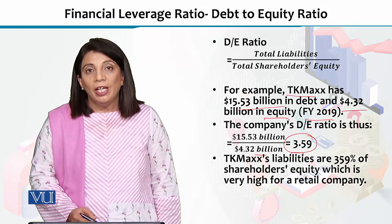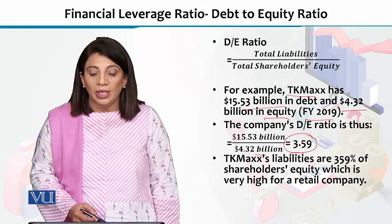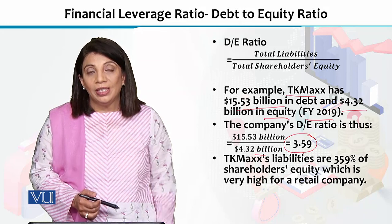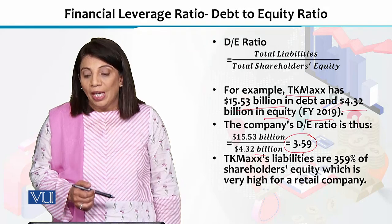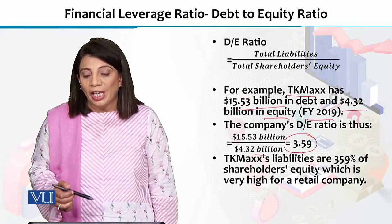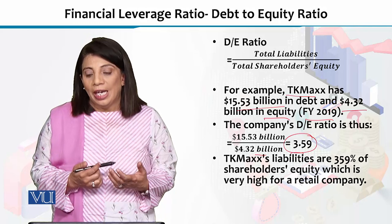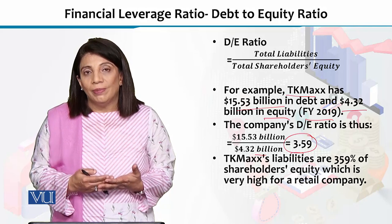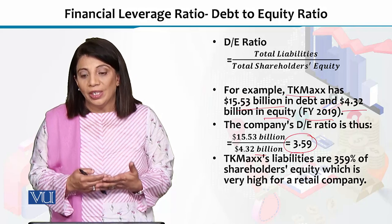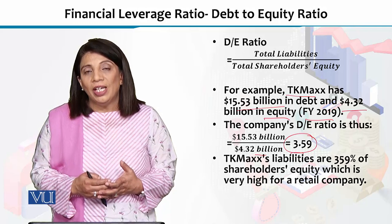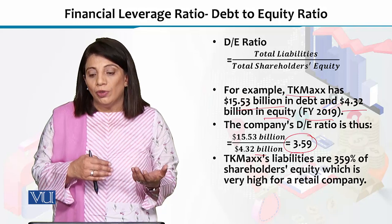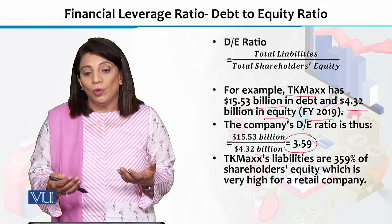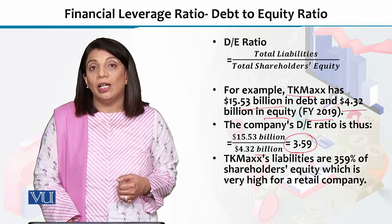If we express this number as a percentage, it means that TK Maxx's liabilities are 359% of the shareholders' equity, which is very dangerous. This is not showing a good sign.